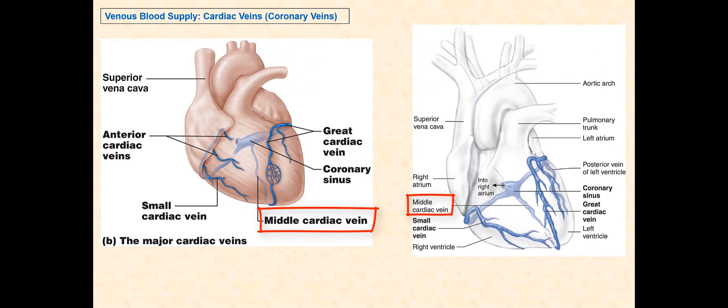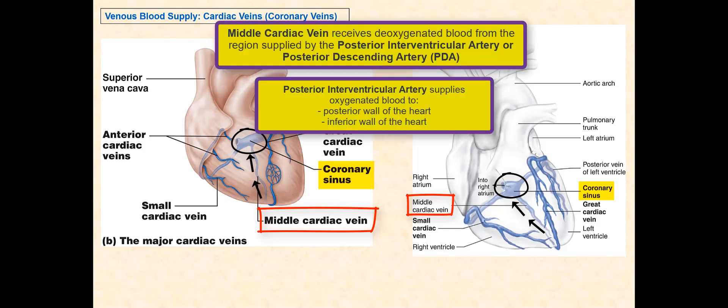The middle cardiac vein is found posteriorly and begins at the apex of the heart, ascends along the posterior interventricular sulcus, and converges with the coronary sinus. The middle cardiac vein runs alongside the posterior interventricular artery, also known as the posterior descending artery. The middle cardiac vein receives deoxygenated blood from the region supplied by the posterior interventricular artery, or the posterior descending artery.